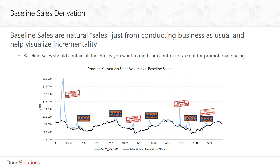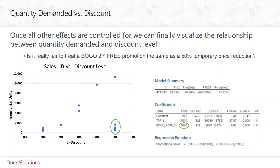We took the incremental sales and charted them against the discount that had been offered to see if we could model the relationship between price and consumer demand. You can see that when we offered a 10% discount three times, incremental sales were around 1,000 units. When we did 20% once in the three years of observed data, sales were around 2,000. At 30%, around 4,000 to 6,000, and so forth. What's a little concerning is that at 50%, we saw incremental sales of around 12,000 one time, but many times around the same incremental sales you would expect at 10% or 20%.